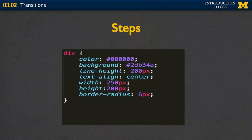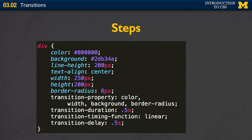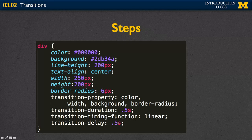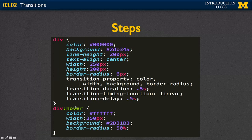Let's look at some code on screen. I defined a div with color, background, line height, width, height — all the typical things. The border radius is pretty small, only six pixels. Then I defined the properties I want to change: color, width, background, and border radius. I set the duration to half a second, a linear transition, and a half-second delay before starting. The last step — using the pseudo-class — was adding div:hover and giving the new values: color switches from black to white, width goes from 250 to 350 pixels, a different background color, and a much bigger border radius.